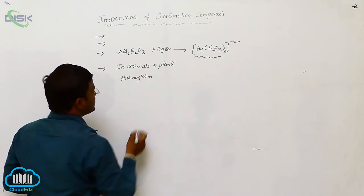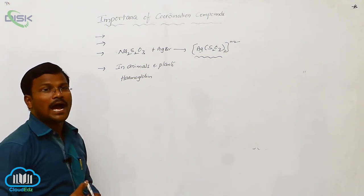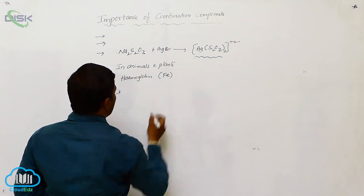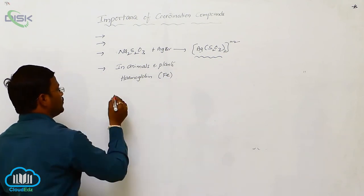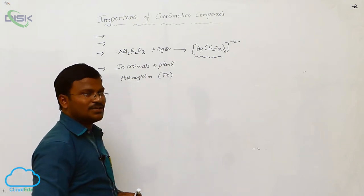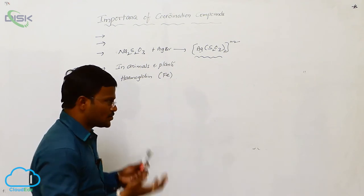What is hemoglobin? It is a coordination compound, coordination complex of iron atom. So, iron atom as central atom is present in hemoglobin. Hemoglobin is an example for coordination compound. The purpose of hemoglobin is useful to carry oxygen from lungs to cells, carbon dioxide from cells to lungs.